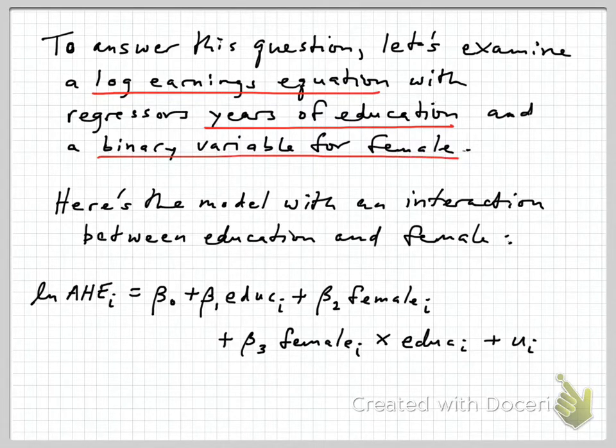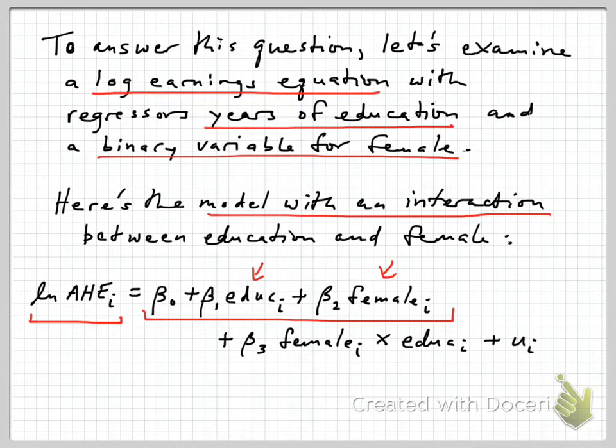Here's the model for predicting log of earnings when we have an interaction between education and female. Our dependent variable is the log of average hourly earnings, and then we have a fairly typical simple earnings model where the two regressors are education, or years of schooling, and a binary for female.